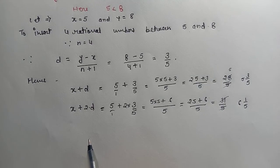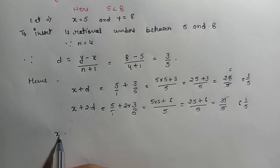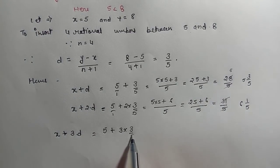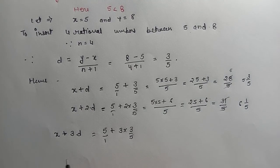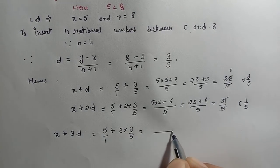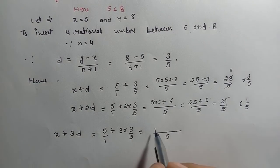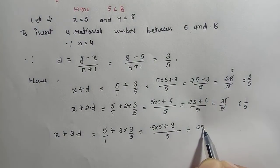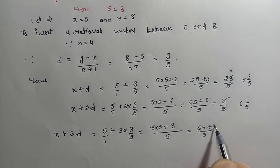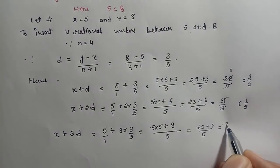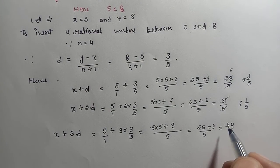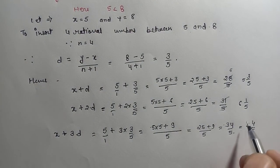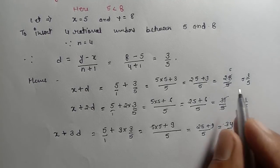Now for the third rational number, we do x plus 3d. Same as 5 plus 3 into d, where d is 3 by 5, and the denominator is 1. Taking LCM of 5 and 1, which is 5: 5 into 5 is 25, plus 3 times 3 is 9, giving 25 plus 9 by 5, which is 34 by 5. This is your third rational number.